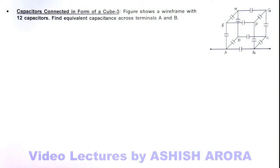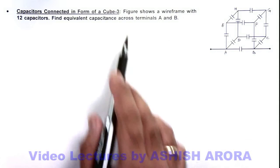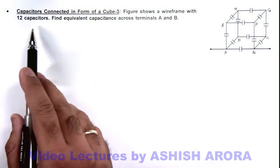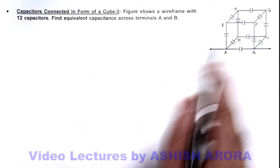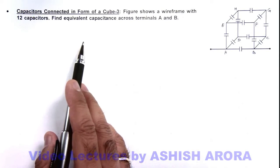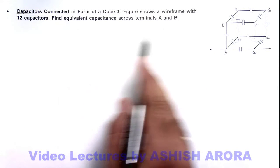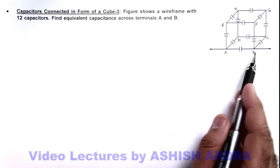In this illustration we'll see the similar structure of a cubical frame of capacitors, where we are given that figure shows a wire frame with 12 capacitors. Here again we assume each capacitor is of capacitance C, and we are required to find equivalent capacitance across these terminals A and B.